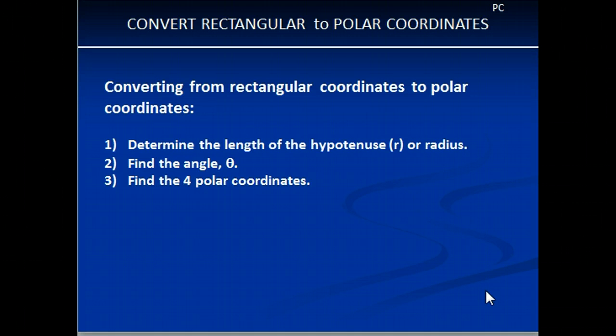The first thing you have to do is determine the length of your hypotenuse or the radius of what would be a circle. The second thing you'll do is find the angle theta, and from that information you will find all four polar coordinates. Do not forget that when you are converting from rectangular to polar, there will be four polar coordinates.